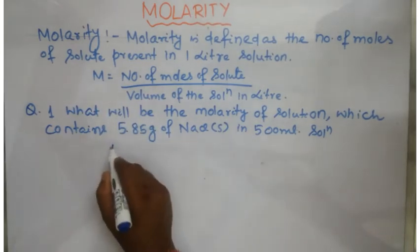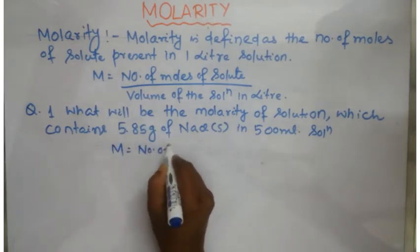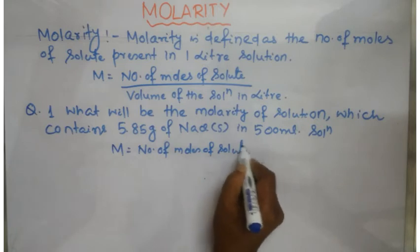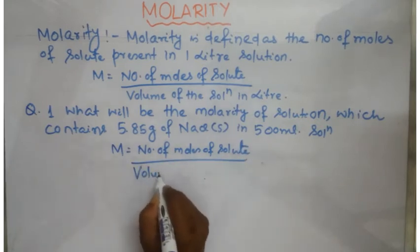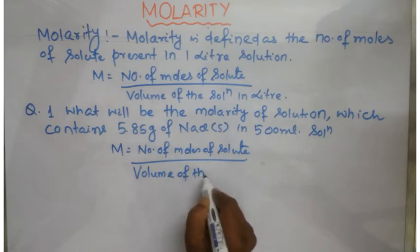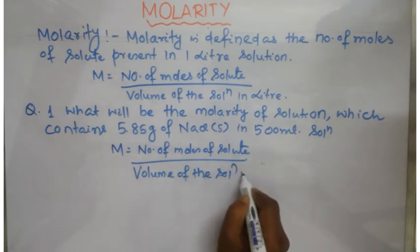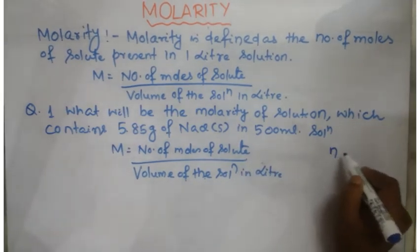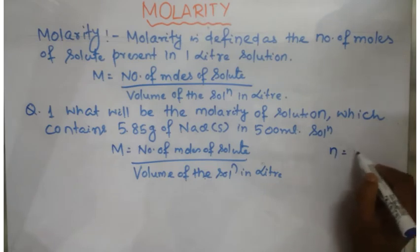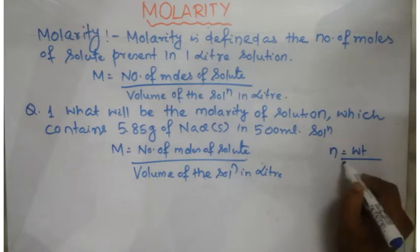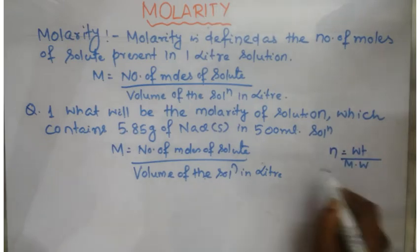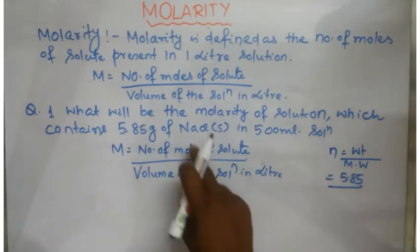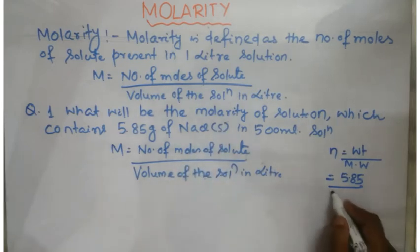You know Molarity of the solution: M is equal to number of moles of solute upon volume of the solution in liter. Number of moles of solute — if small n is number of moles of solute — this is weight upon molecular weight. Weight is given to you, that is 5.85 gram, and molecular weight of sodium chloride: sodium is 23 gram, chlorine is 35.5 gram, giving 58.5 gram.